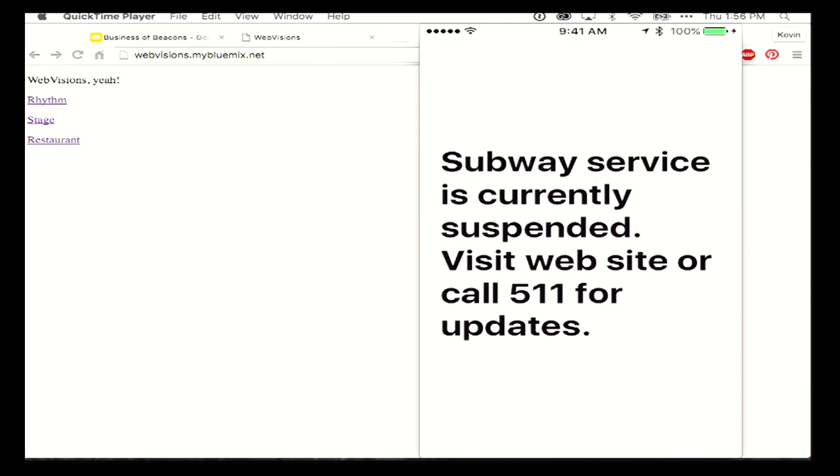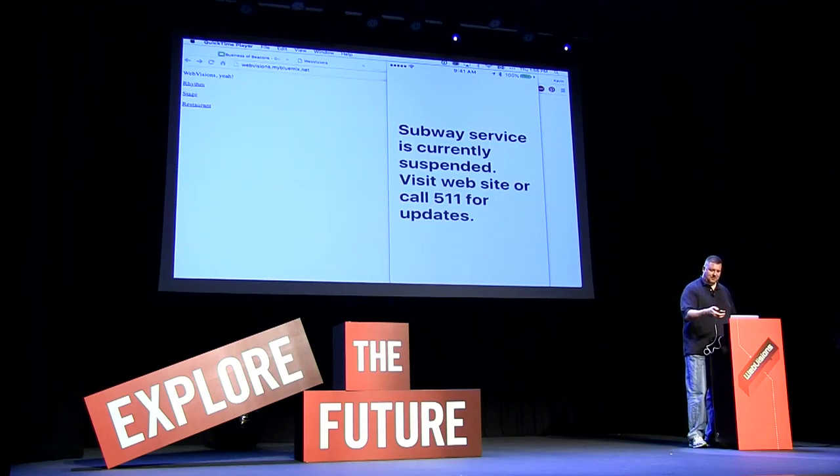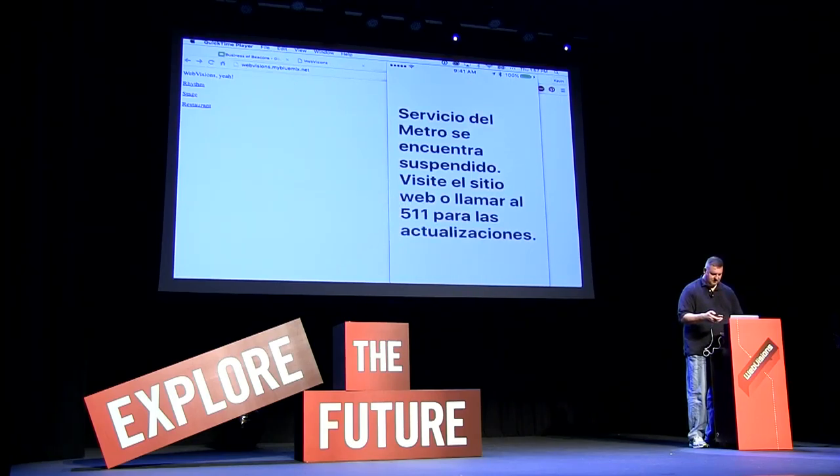I've got two beacons on stage — both Light Blue Bean beacons. When the phone comes near a beacon and sees it, it goes out to Bluemix and looks up in a database the textual description for this beacon, because it knows those three pieces of information: the UUID, the major, and the minor. It looks that up and pulls back the information displayed on screen. For this beacon, it could be 'subway services suspended.' And because Watson does really well at translation, we can have it translated and even spoken.